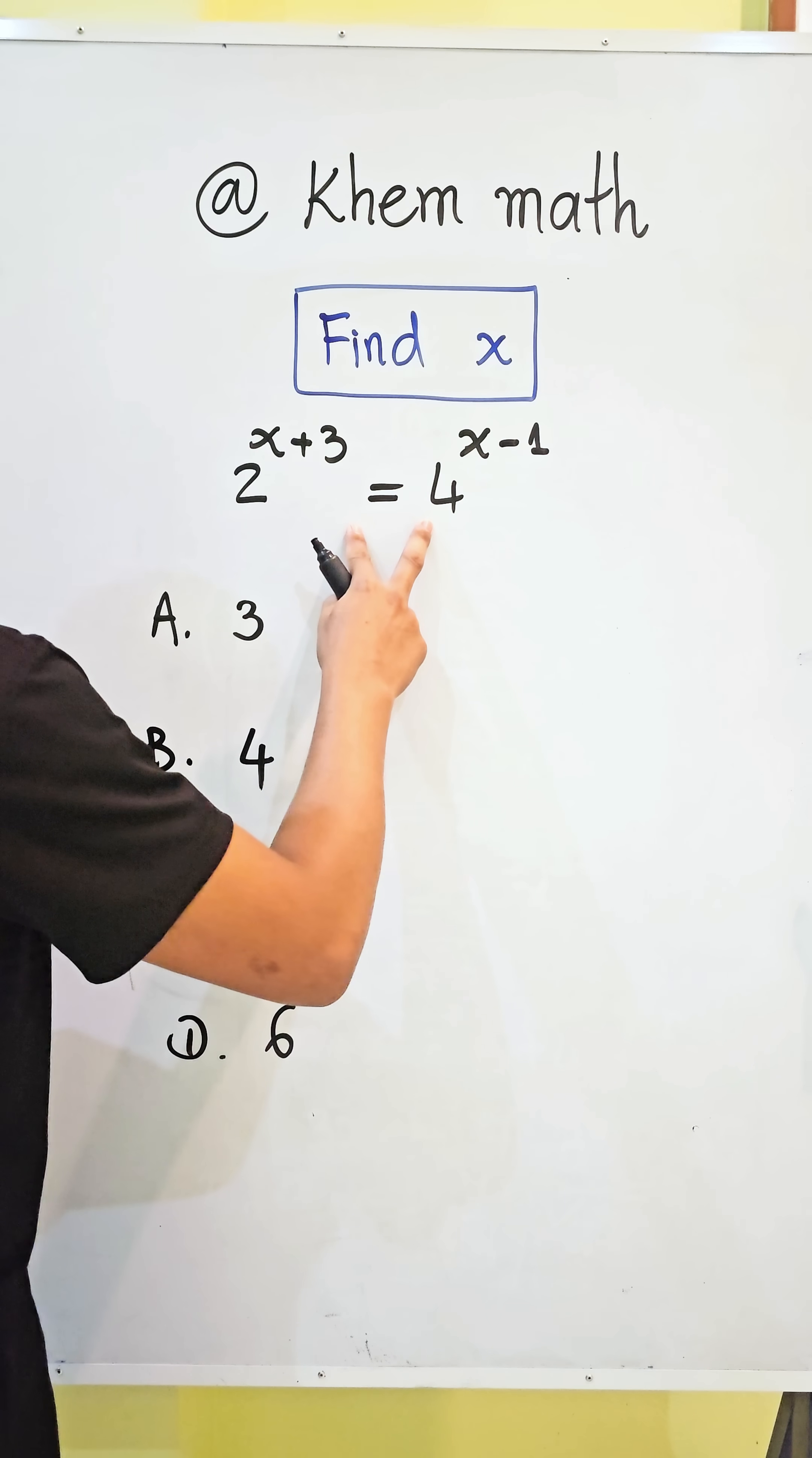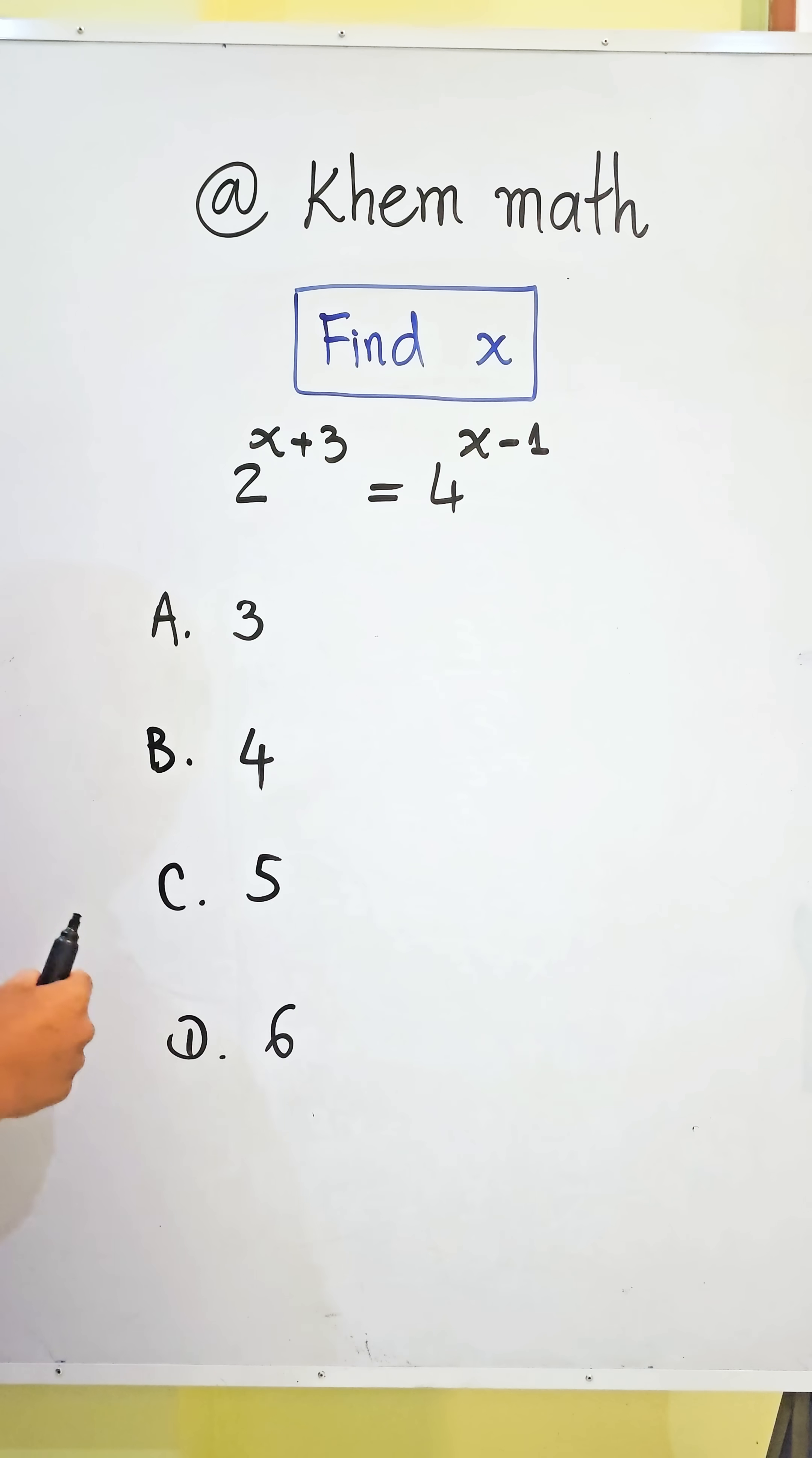Look, here is our equation. This is an exponential equation. The first step, we must write the same base on both sides of this equation.